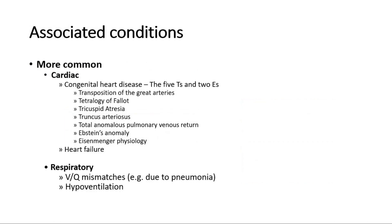Central cyanosis can be caused by cardiac causes, such as congenital heart disease, which include the 5T and 2E. They are transposition of the great arteries, tetralogy of Fallot, tricuspid atresia, truncus arteriosus, total anomalous pulmonary venous return, Ebstein's anomaly, and Eisenmenger physiology. Heart failure is also one of the causes.